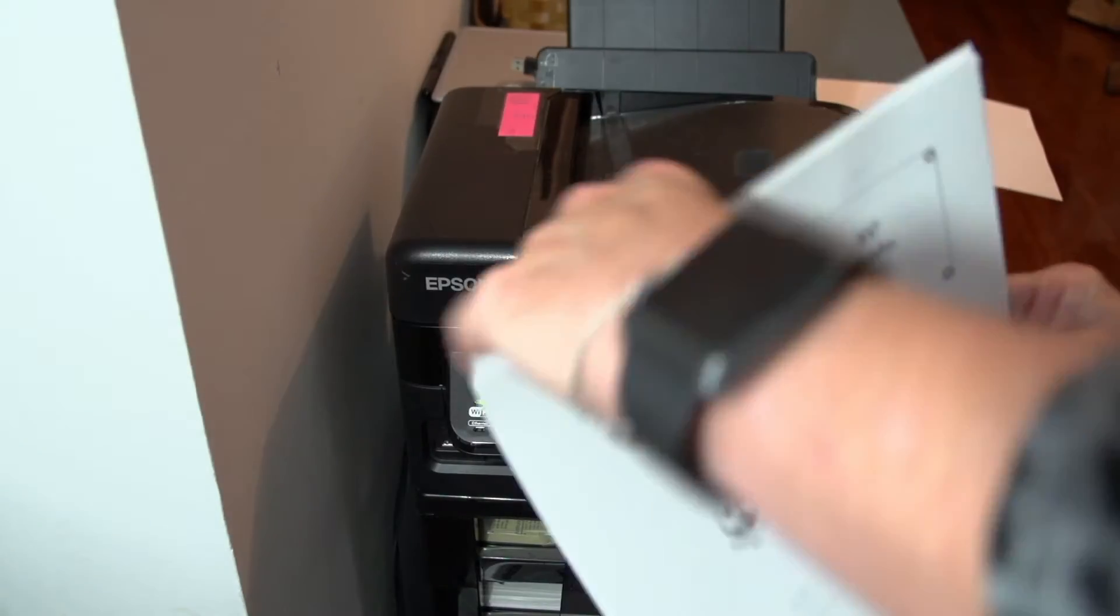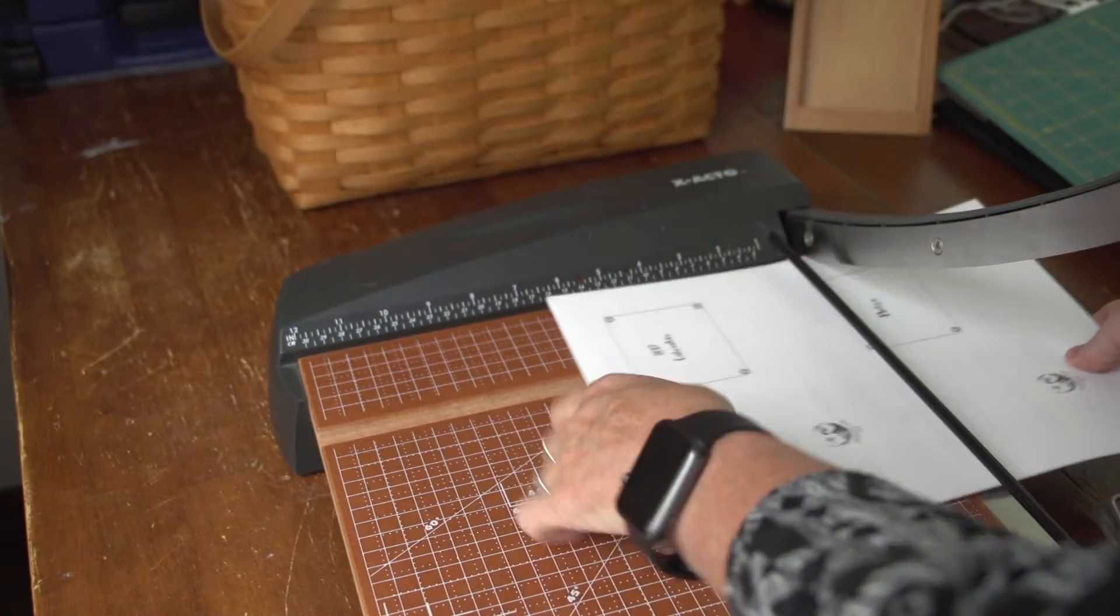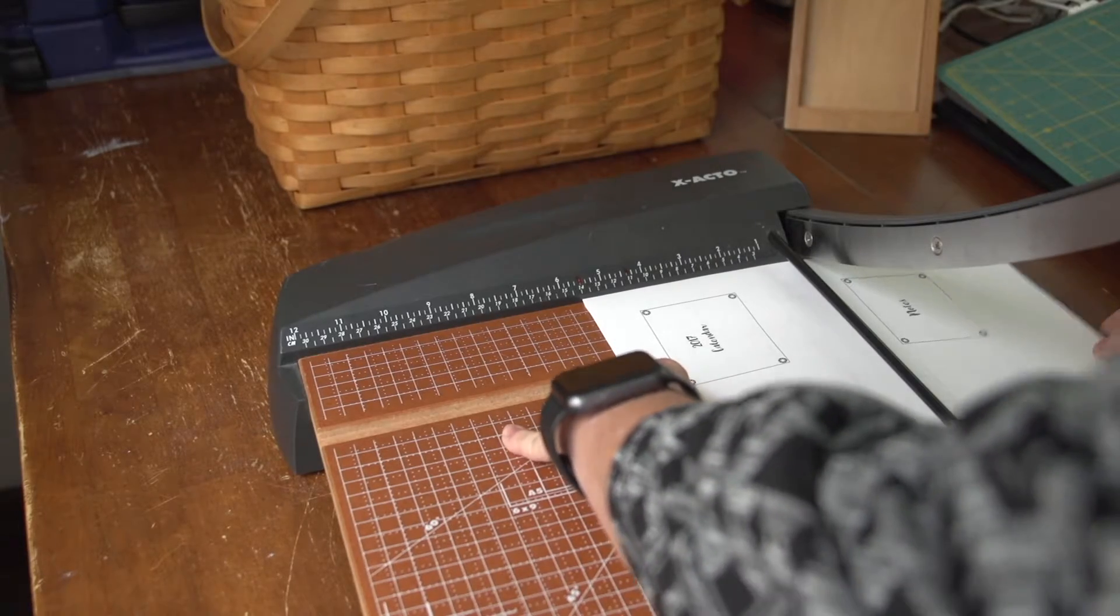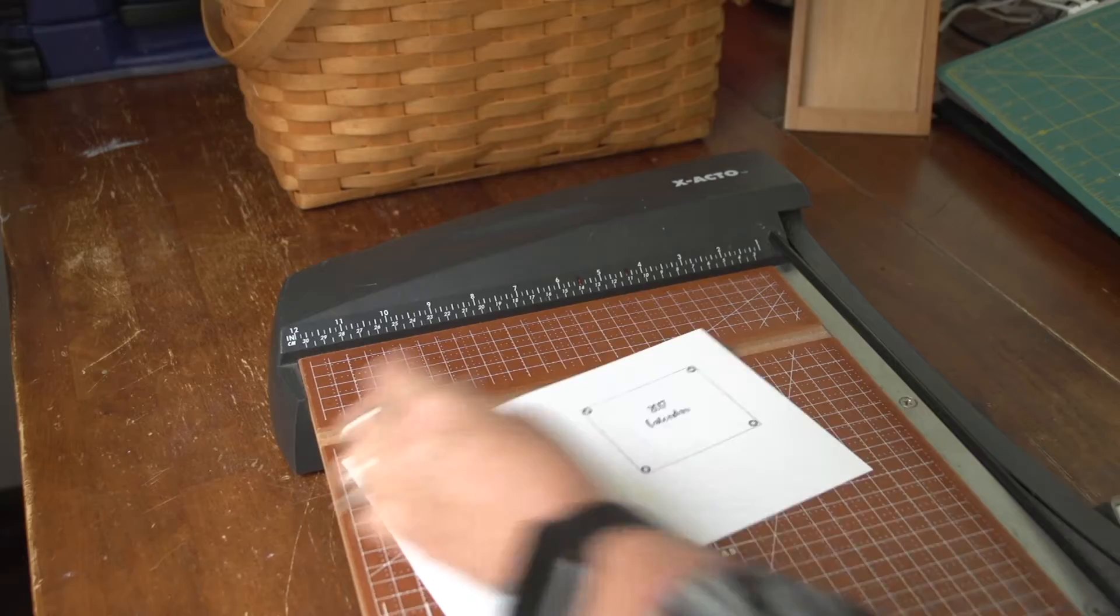One of the things I like about Field Notes size is you can get two booklets per printing. And then cut it right down the middle. Voila! Two booklets.